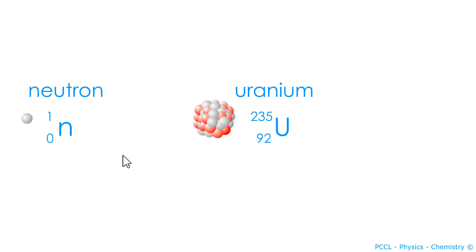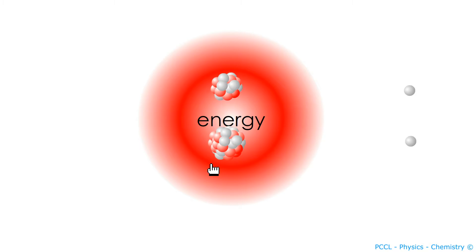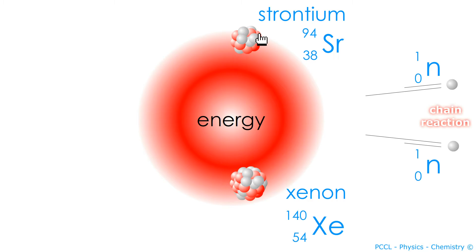The U-235 isotope of uranium splits into two nuclei when it interacts with a neutron. The two nuclei here, don't memorize this, are strontium-94 and xenon-140. But this is an example, it could be two other medium-sized nuclei.